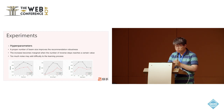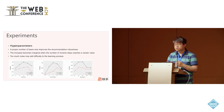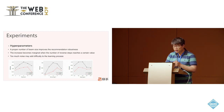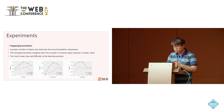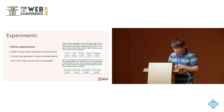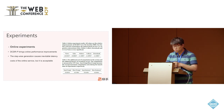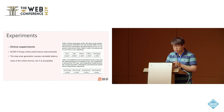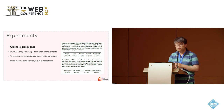From the hyperparameter analysis, we draw several conclusions. First, a proper beam size improves recommendation robustness. Second, improvement becomes marginal when the number of reverse steps reaches a certain value, which justifies our early stop strategy. Third, too much noise injected during training may add difficulty to the learning process. These conclusions match experiences from other papers. We also conduct online experiments, and DCDR at the permutation level brings online performance improvements. The stepwise generation process does cause latency costs, but compared to the performance improvements, it is acceptable.